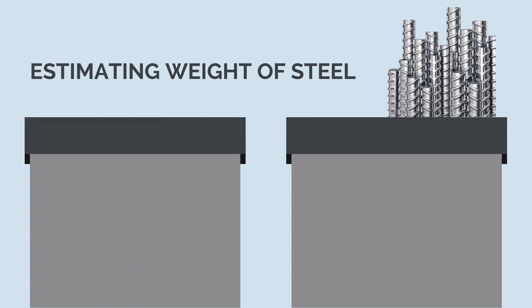There are two methods we can use to estimate the weight of steel reinforcement in a structure. We can use the ratio method, which is easier but less accurate, or calculate the volume of steel, which is more effort but also more accurate.